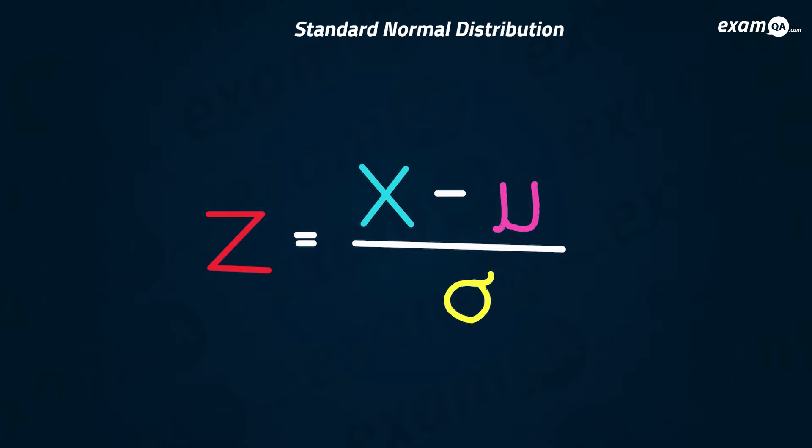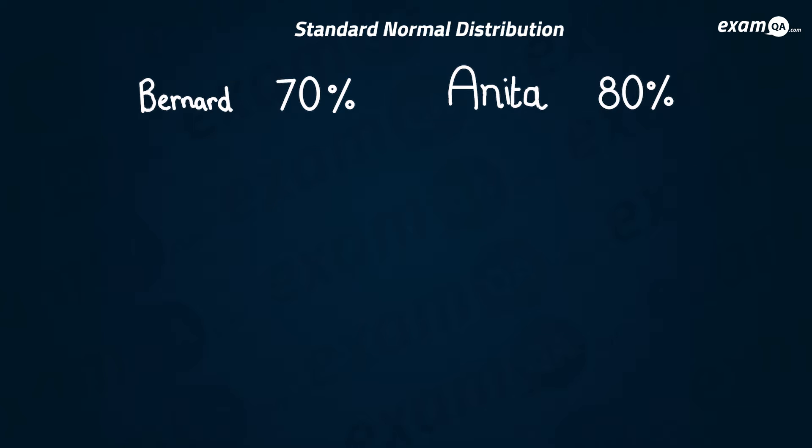Let's look at how this standardized value works and what it means. Here we've got two students: in a test, Bernard scored 70% and Anita scored 80%. Can we use these scores to decide who did better? The answer is no, because they've done two different tests at two different schools, so it wouldn't be fair to compare the scores as they are. However, if we standardize them, we can then compare them.